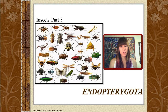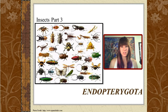Endopterygota are the holometabolous insects, and these are the insects that have complete metamorphosis, meaning that they have a larval stage, a pupal stage, and then an adult stage — like your butterflies, for example. They have the caterpillar, then the pupa or the chrysalis or the cocoon, and then the adult stage. All of the insects we are going to talk about today have that kind of development.